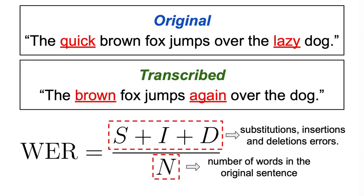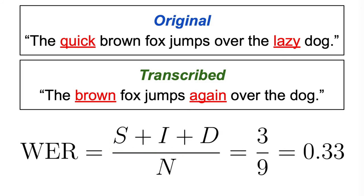Giving us a word error rate of 3 over 9, which simplifies to 1 over 3, or approximately 0.33. This means that on average, one third of the words in the transcribed text differ from the original text.